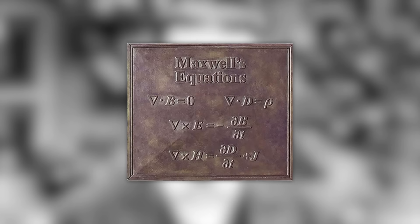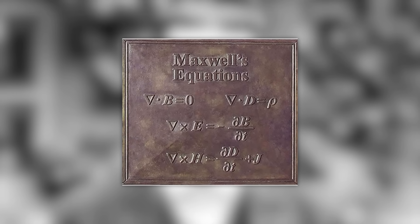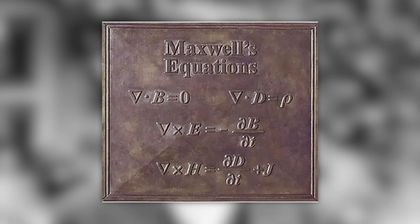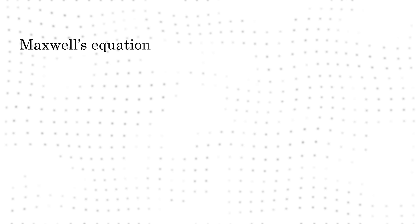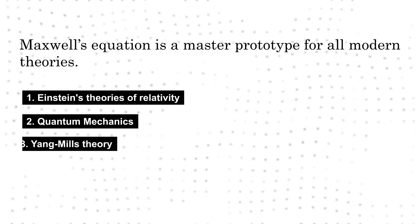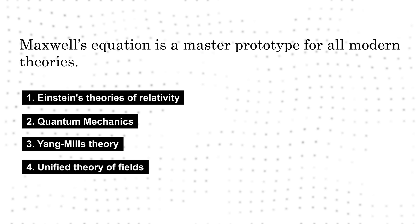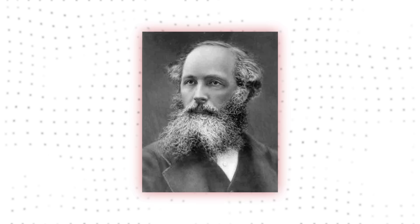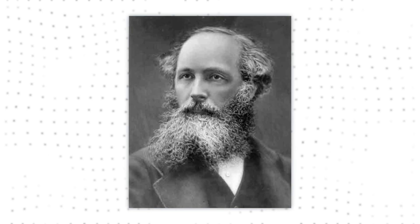The ultimate importance of the Maxwell theory is far greater than its immediate achievement in explaining and unifying the phenomena of electricity and magnetism. Its ultimate importance is to be the prototype for all the great triumphs of 20th century physics. It is the prototype for Einstein's theories of relativity and quantum mechanics, for the Yang-Mills theory of generalized gauge invariance, and for the unified theory of fields and particles that is known as the standard model of particle physics. All these theories are based on the concept of dynamical fields introduced by Maxwell in 1865.